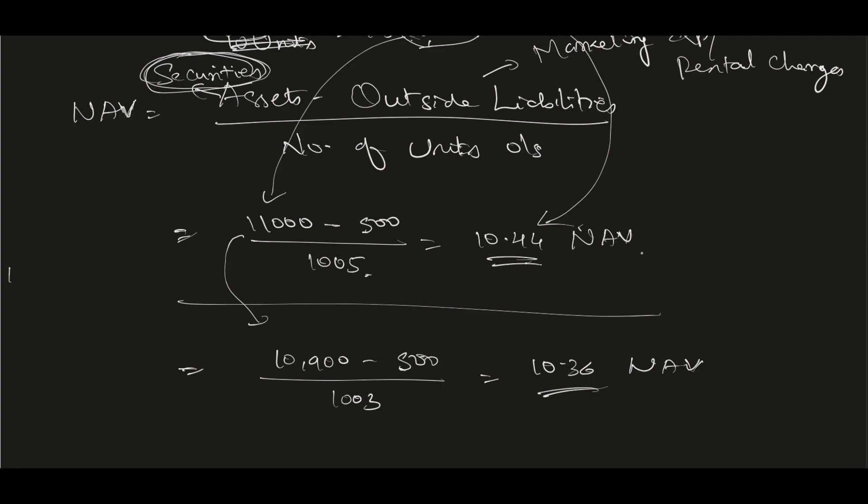Every day this NAV value keeps on changing like this. Majorly the change happens because of the securities value. Otherwise, people will keep buying more units or redeeming their units back to the fund, because of which the number of units will also keep changing. But this is the formula and how it is calculated.